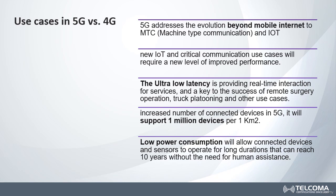5G is focusing on the machine type communication, IoT, and advanced sensors. The main evolution compared with 4G and 4.5G is that beyond data speed improvements, new IoT and critical communication use cases will require a new level of improved performance which will be provided by 5G and will not be possible with other generations.